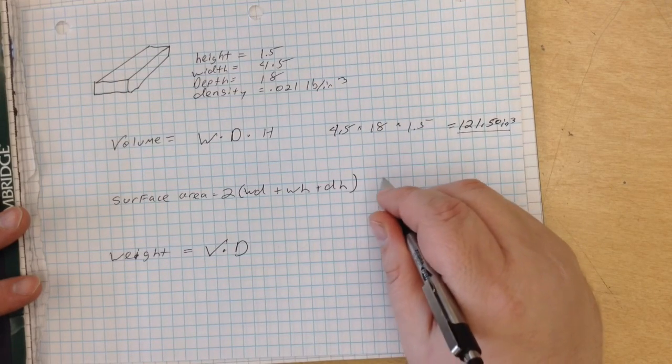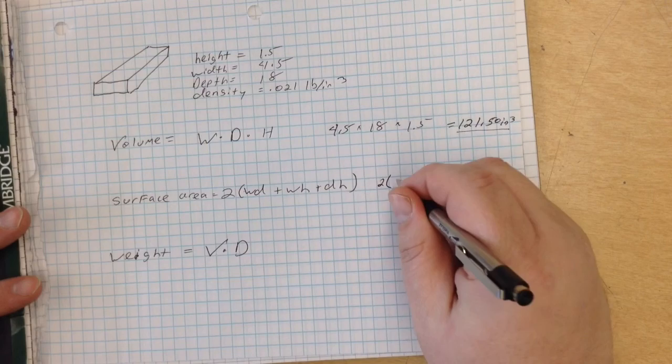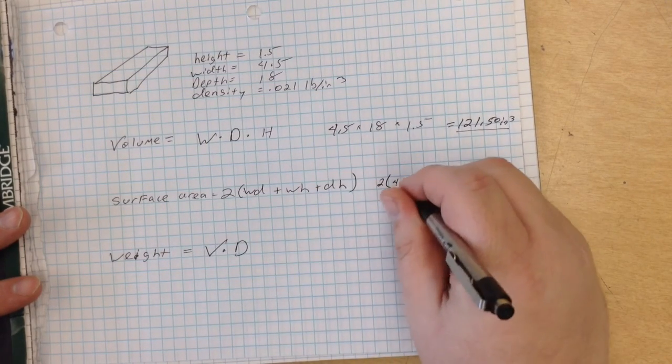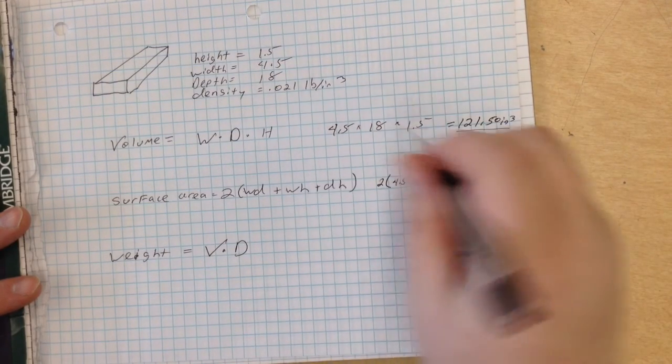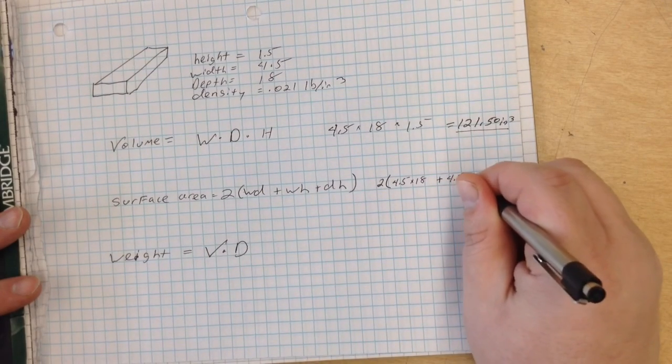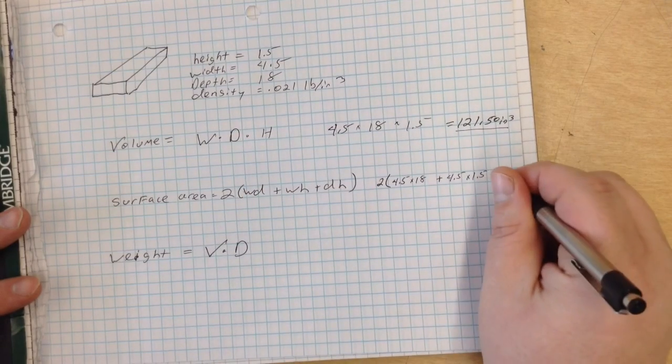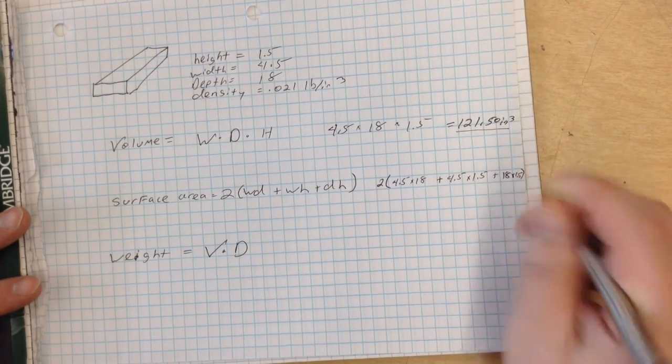So let's plug in the numbers that we know first. 2, our width is 4.5, our depth is 18, plus width times height, so 4.5 times 1.5, plus depth 18 times 1.5.